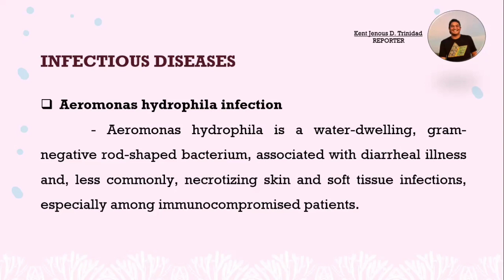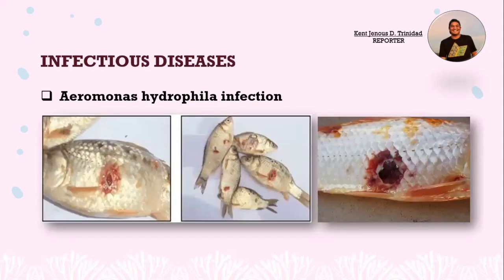An example of infectious diseases is Aeromonas hydrophila infection. It is a water-dwelling gram-negative rod-shaped bacterium associated with diarrheal illness and, less commonly, necrotizing skin and soft tissue infections, especially among immunocompromised patients. As you can see in the picture, it necrotizes the skin and soft tissues of the fish.